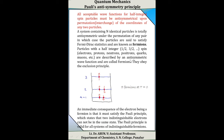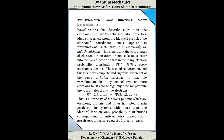It can be stated another way: all acceptable wave functions for half-integral spin particles must be antisymmetrical upon permutation or interchange of the coordinates of any two particles. A system containing identical particles is totally antisymmetric under the permutation of any pair, in which case the particles satisfy Fermi-Dirac statistics and are known as fermions. That is, particles with half-integer spins (1/2, 3/2, etc.) are described by antisymmetric wave functions and are called fermions. They obey the Pauli exclusion principle. Examples are electrons, protons, neutrons, positrons, quarks, muons, etc. An immediate consequence of the electron being a fermion is that two indistinguishable electrons cannot be in the same state. The Pauli exclusion principle is valid for all systems of indistinguishable fermions.